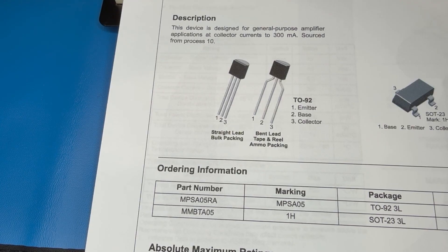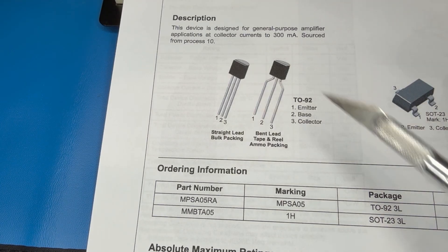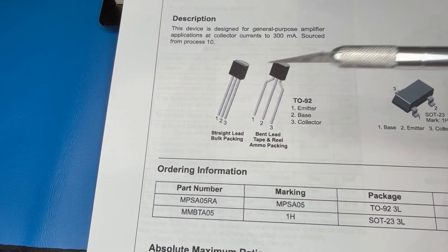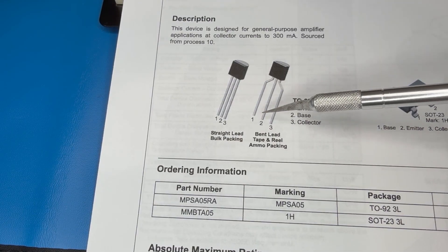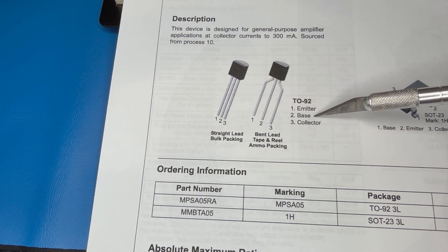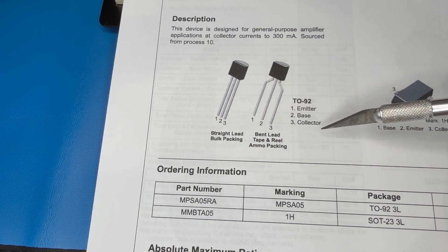We're looking at the MPSA05 general purpose amplifier. As you can see, this is the case, they call it a TO-92. There's pin 1, pin 2, pin 3. Pin 1 is the emitter, pin 2 is the base, and pin 3 is the collector.